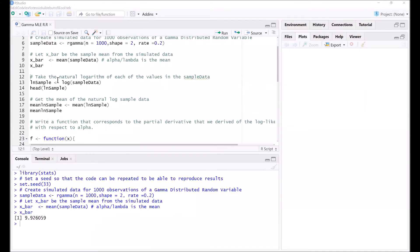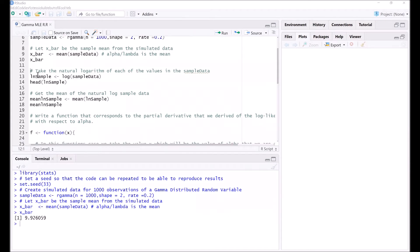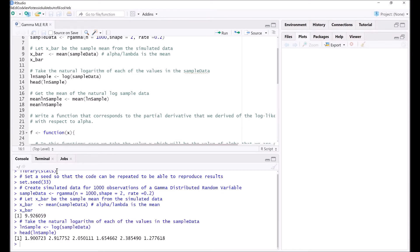Next, we need to take the natural logarithm of each of the values in the sample data. So firstly, we take the natural log of the sample data. And let's just have a look at the first six results from that natural logarithm of the sample data.